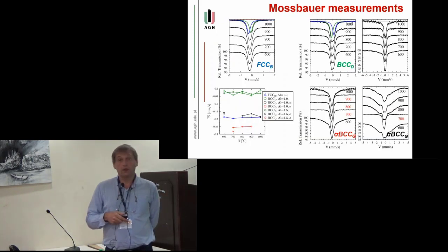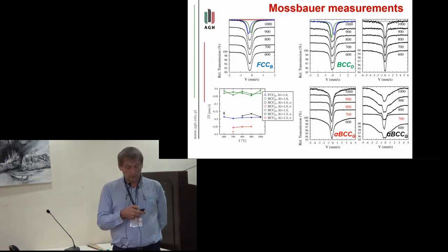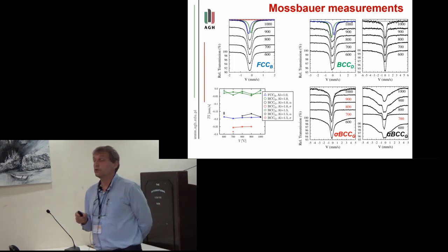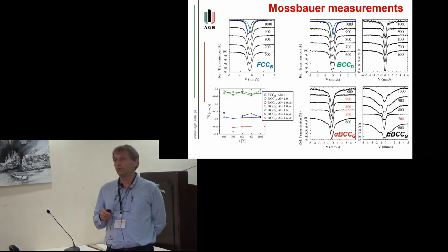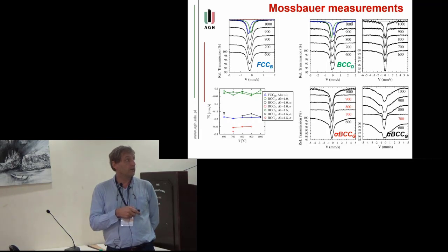The spectra are shown on this picture. The first one, FCC bright phase—the spectra are all measured at room temperature, but the samples were annealed for 24 hours in different temperatures. And for the FCC bright phase, we are always observing a doublet, so nothing has changed.